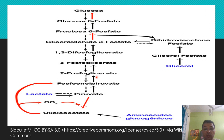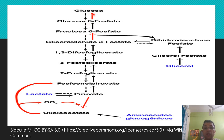Phosphoenolpyruvate changes into 2-phosphoglycerate, then 3-phosphoglycerate, then 1,3-diphosphoglycerate. It is then converted into two compounds: glyceraldehyde-3-phosphate and dihydroxyacetone phosphate. These are then converted into fructose-1,6-bisphosphate, then fructose-6-phosphate, then glucose-6-phosphate, and ultimately glucose is produced.